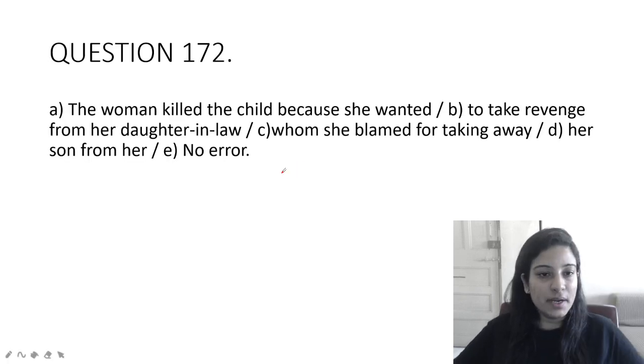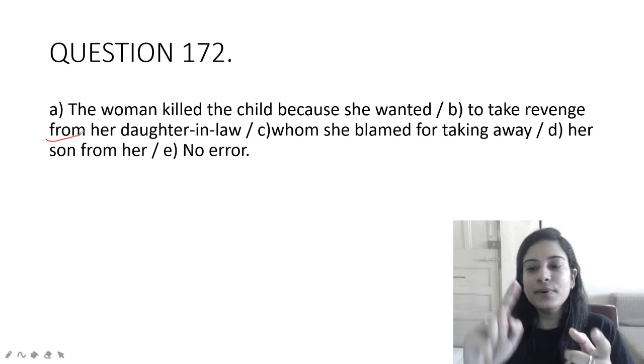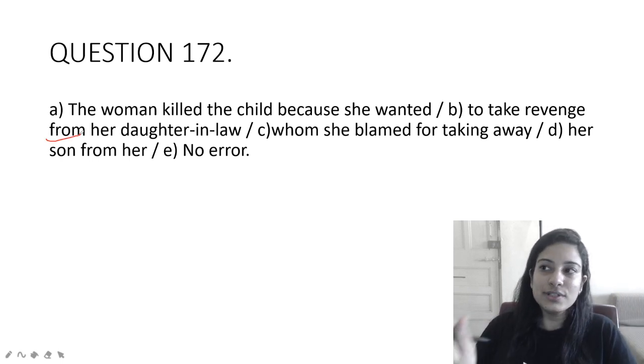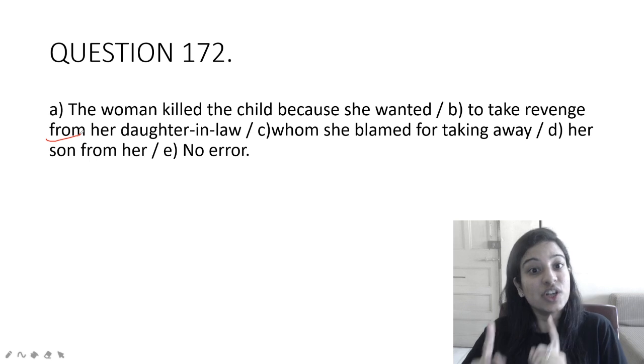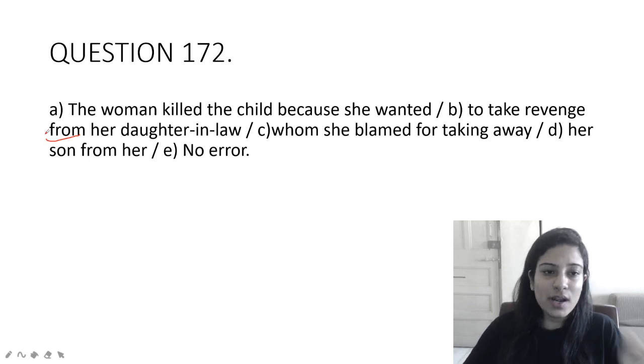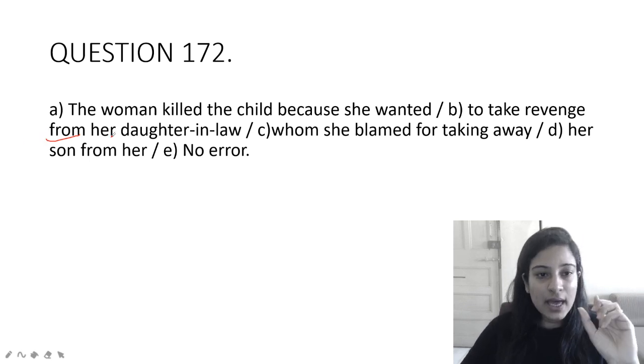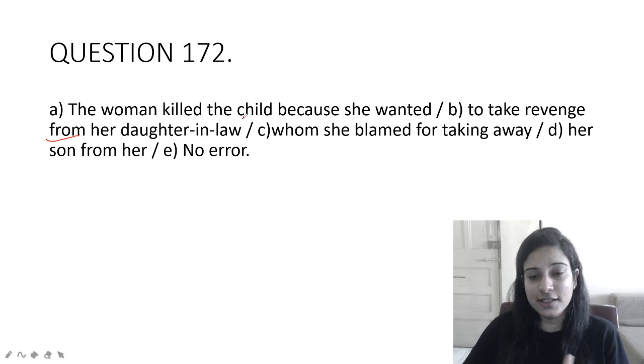Next one: The woman killed the child because she wanted to take revenge from her daughter-in-law whom she blamed for taking away her son from her. The error is in option B because you don't take revenge from someone, you take revenge on someone or revenge against someone. So here you will put 'on,' not 'from.'